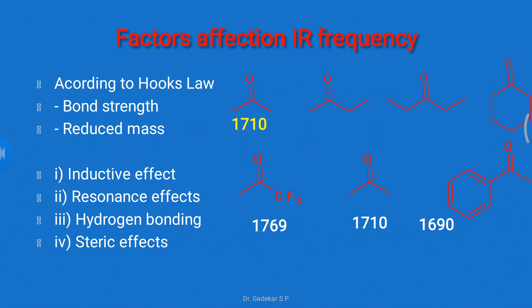Next is the factors affecting IR frequency. According to Hooke's law, IR frequency absorption is directly proportional to bond strength and inversely proportional to reduced mass. In a plain carbonyl compound, its IR stretching frequency is 1710 cm⁻¹ because there are no electron-withdrawing or electron-donating groups or steric effects. There are four factors that affect IR frequency.